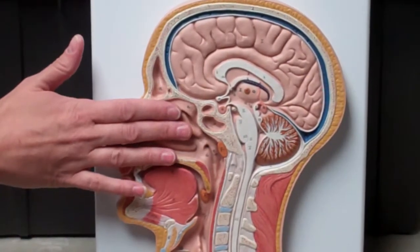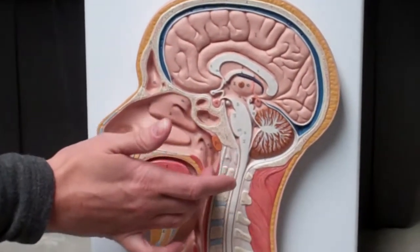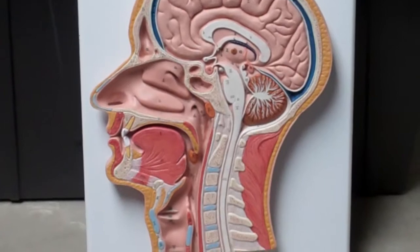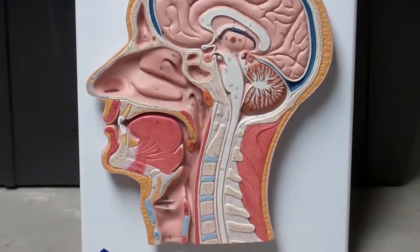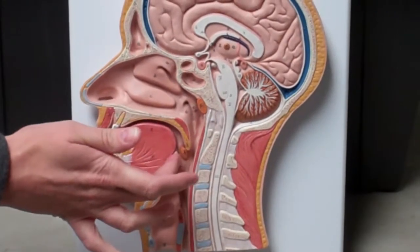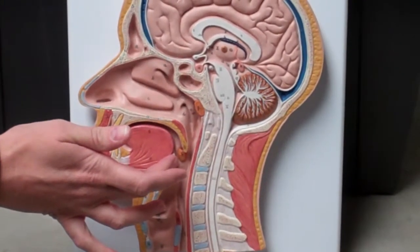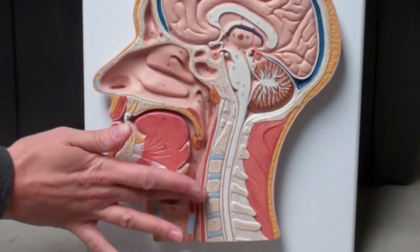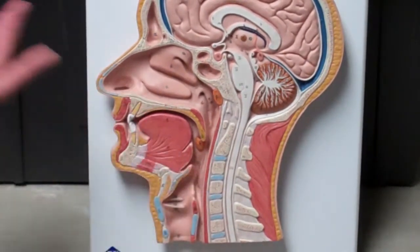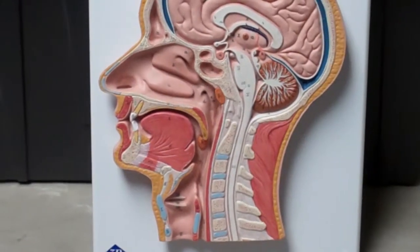As we move from the nasal cavity towards the pharynx, remember the pharynx is divided into three. The back portion here behind the nasal cavity is our nasal pharynx. The middle portion here is going to be our oral pharynx, and then down the most inferior portion right above the larynx is the laryngeal pharynx.